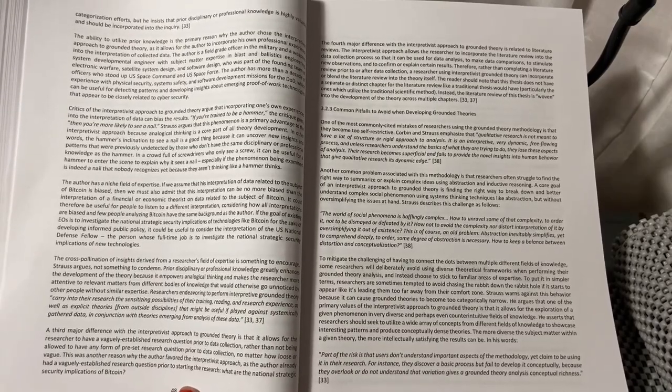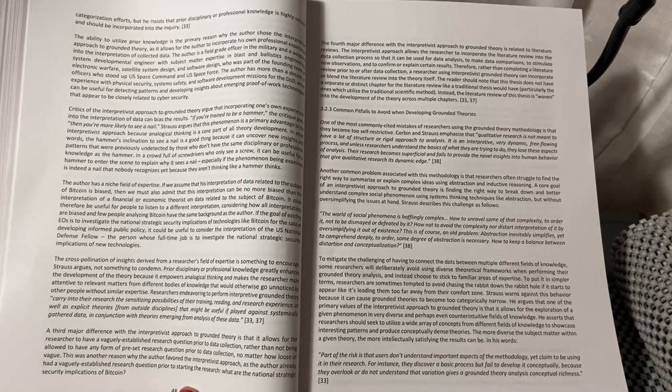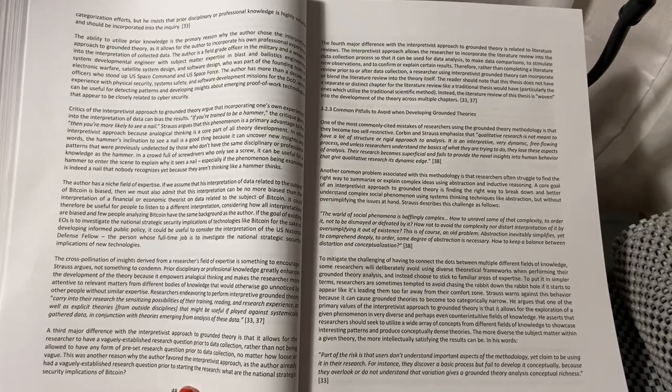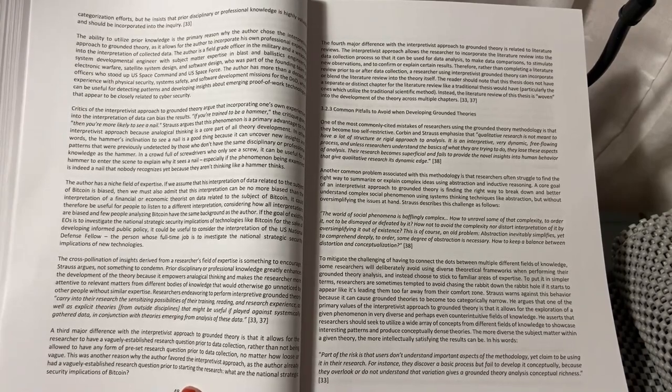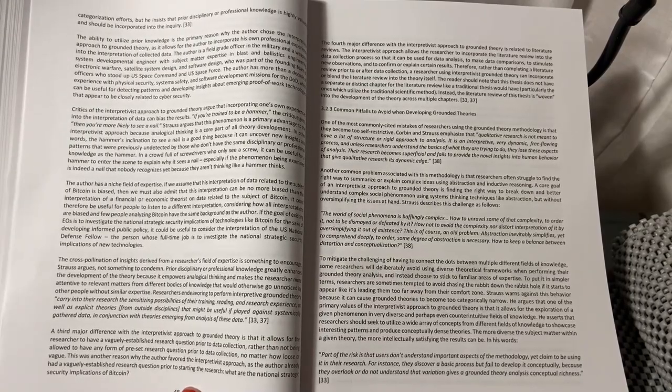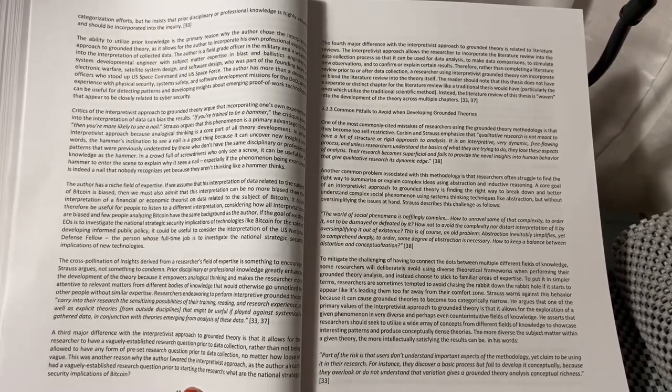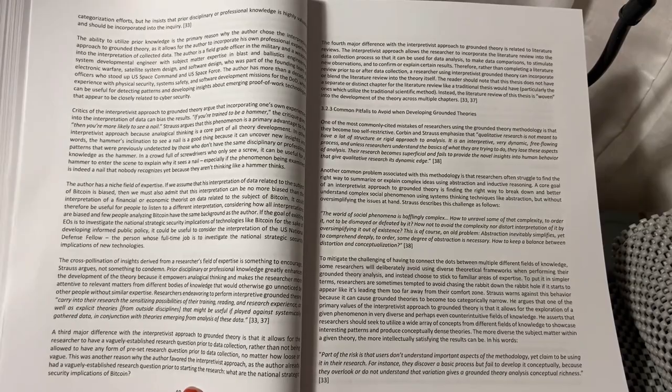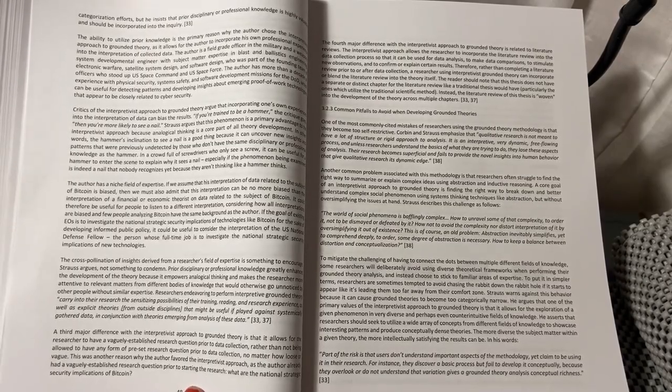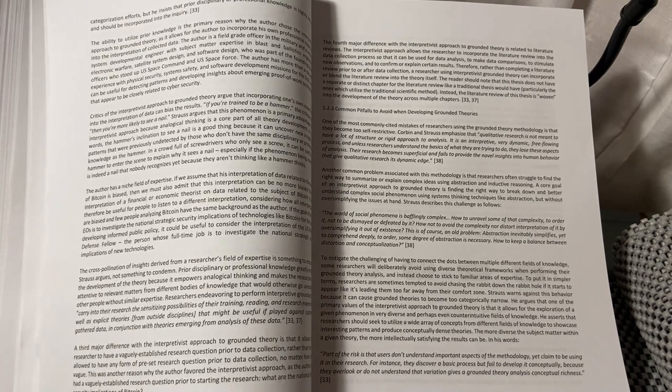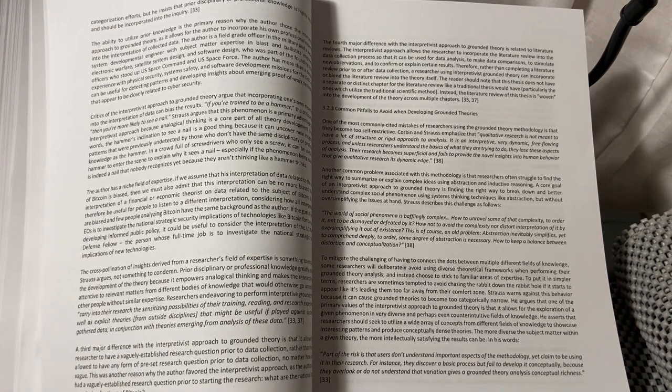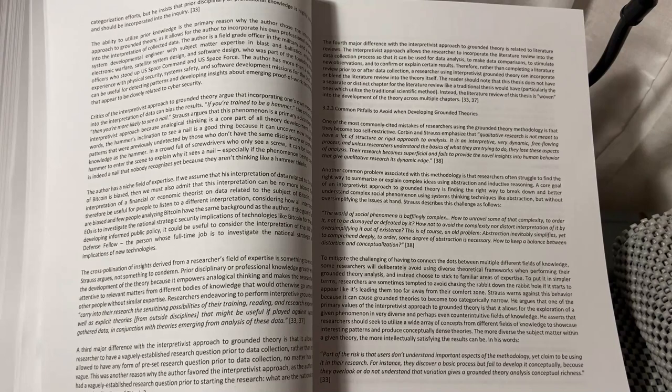The fourth major difference with the interpretive approach to grounded theory is related to literature reviews. The interpretive approach allows the researcher to incorporate the literature review into the data collection process so that it can be used for data analysis, to make data comparisons, to stimulate new observations, and to confirm or explain certain results. Therefore, rather than completing a literature review prior to or after data collection, a researcher using interpretive grounded theory can incorporate or blend the literature review into the theory itself. The reader should note that this thesis does not have a separate or distinct chapter for the literature review like a traditional thesis would have, particularly the ones which utilize the traditional scientific method. Instead, the literature review of this thesis is woven into the development of the theory across multiple chapters.